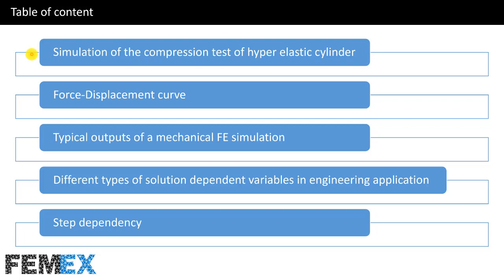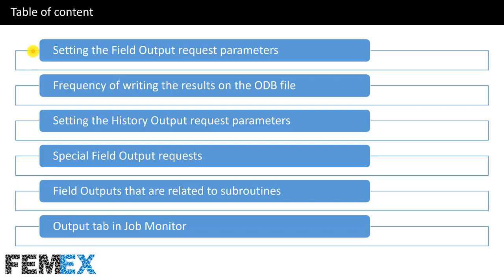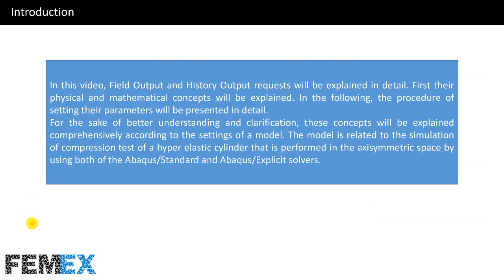This is the table of content. I will talk about simulation of the compression test of a hyperelastic cylinder, force displacement curve, typical outputs of a mechanical FE simulation, different types of solution dependent variables in engineering applications, step dependency, setting the field output request parameters, frequency of writing the results on the ODB file, setting the history output request parameters, special field output requests, field outputs related to subroutines, and finally the output tab in job monitor.